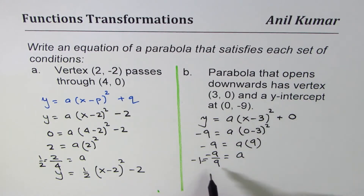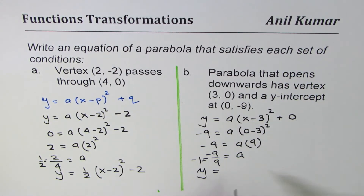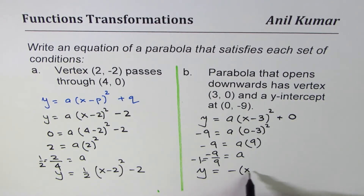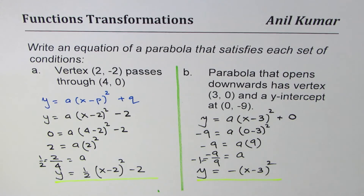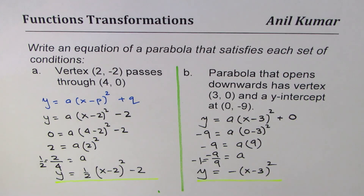The value a = -1 automatically confirms the parabola opens downwards. So the equation is y = -(x - 3)². That is how you get the equation of the parabola from the given description. I hope that helps — feel free to post your questions, subscribe to my videos, and if you like it, leave a like. Thank you and all the best!